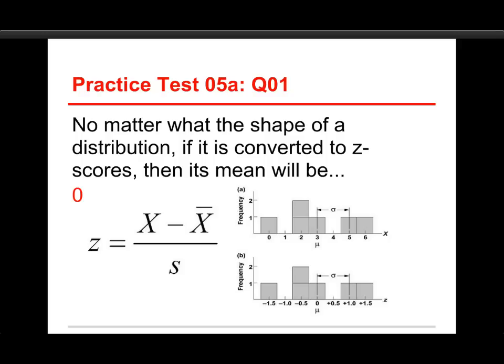You see on the top one that the mean is 3. It's right there in the middle. And beneath it, where it's converted to z-scores, you can see it becomes 0. And that will always be the case no matter what the shape of the original distribution.